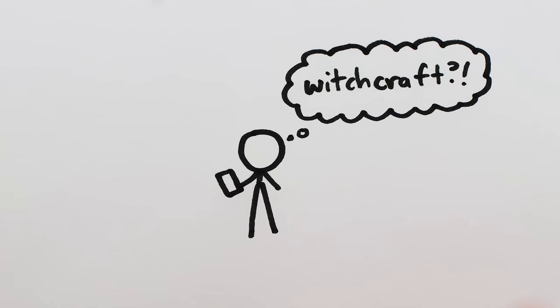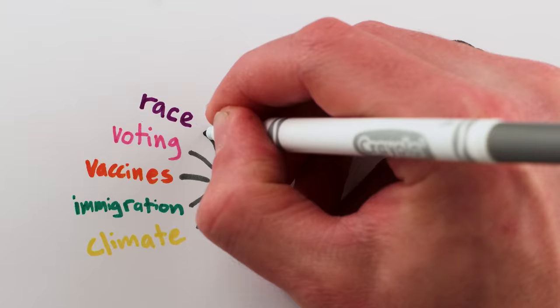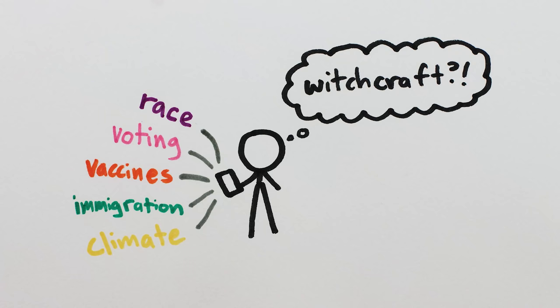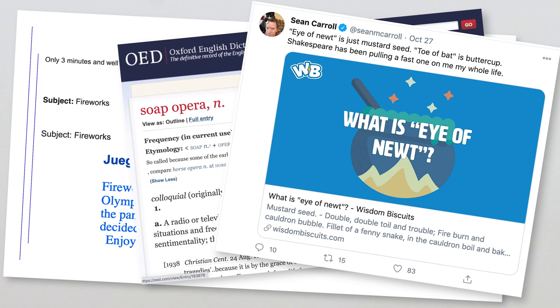This might all seem a bit silly, but I'm sure you can think of plenty of more serious and consequential claims being made online. And because they pull at our heartstrings or stoke our anger, it's easy to believe them and act based on them. Because we want to. I mean, the examples in this video were all shared with me by very smart, thoughtful people. The person who sent me the fireworks email I know was sending it to brighten my day.